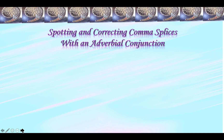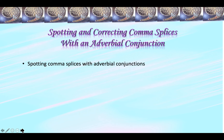Now let's talk about spotting and correcting comma splices that already have adverbial conjunctions. Using the 'Lists of Words Important in Grammar' handout, go through your paper and find every adverbial conjunction. Then ask yourself: could everything to the left of that conjunction stand alone as a complete sentence? If yes, ask: could everything to the right stand alone as a complete sentence? If the answer to both is yes, ask what punctuation you used before that conjunction — because that's where the punctuation goes. It should be a semicolon. If it's a comma, that's a comma splice.